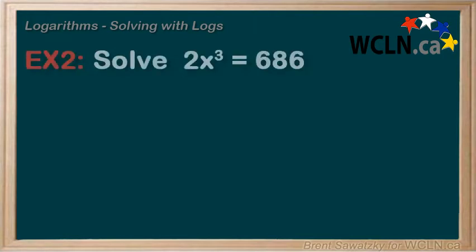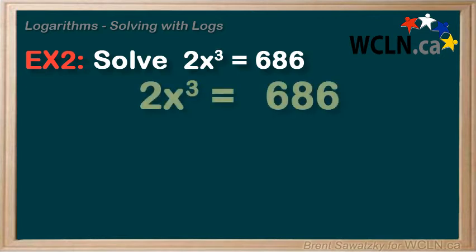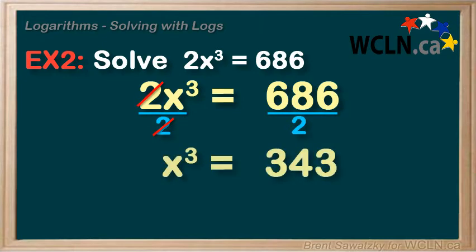Another review. Example 2, 2x cubed equals 686. So isolating for our x, first we think, let's divide both sides by 2. And we're left with x cubed equals 343.